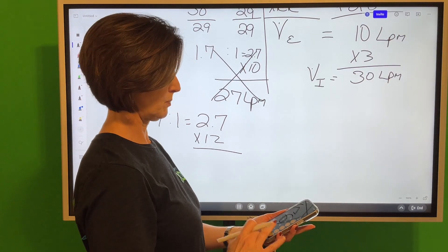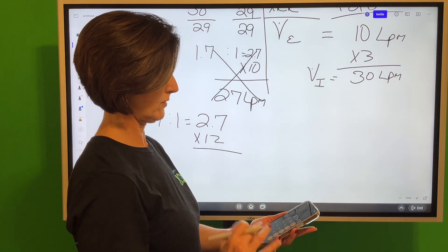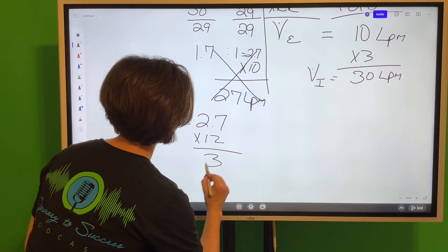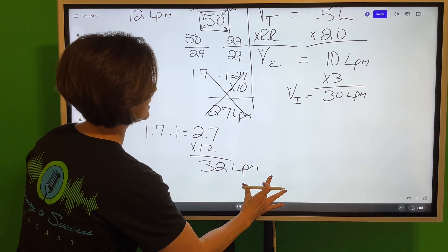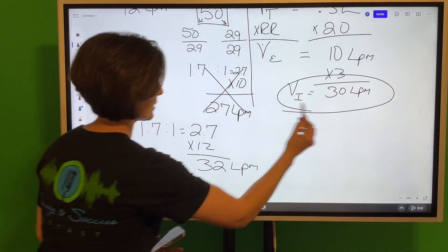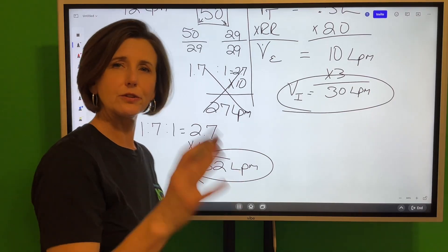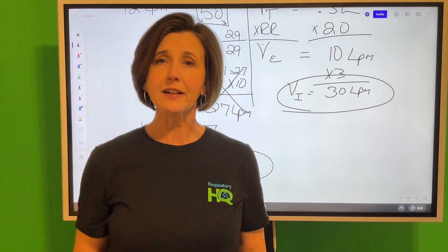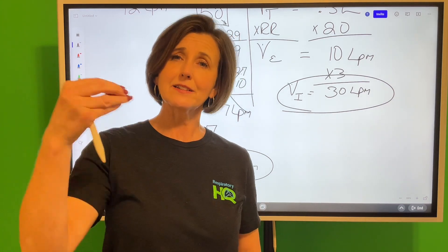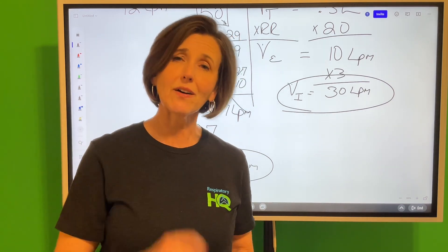But instead of times 10, we're going to take it times 12. When you have 2.7 times 12, that gives us a flow of 32.4, I'm just going to call it 32 liters per minute. Our patient needs 30, we're providing 32. That means every bit of what the patient is pulling in comes from that device, so they will get that set 50%.